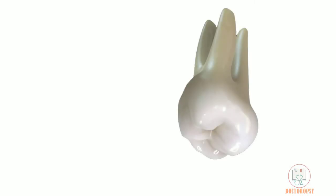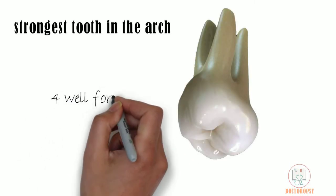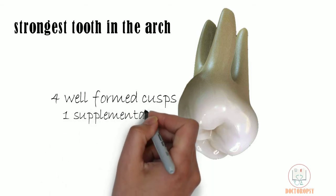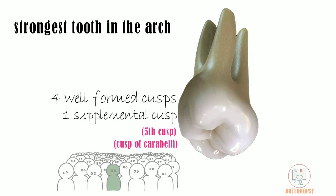Maxillary first molar is the strongest tooth in the arch. It has 4 well-formed cusps and a fifth supplemental cusp called the fifth cusp or cusp of Carabelli. The fifth cusp is unique to the maxillary first molar and not seen in any other tooth.